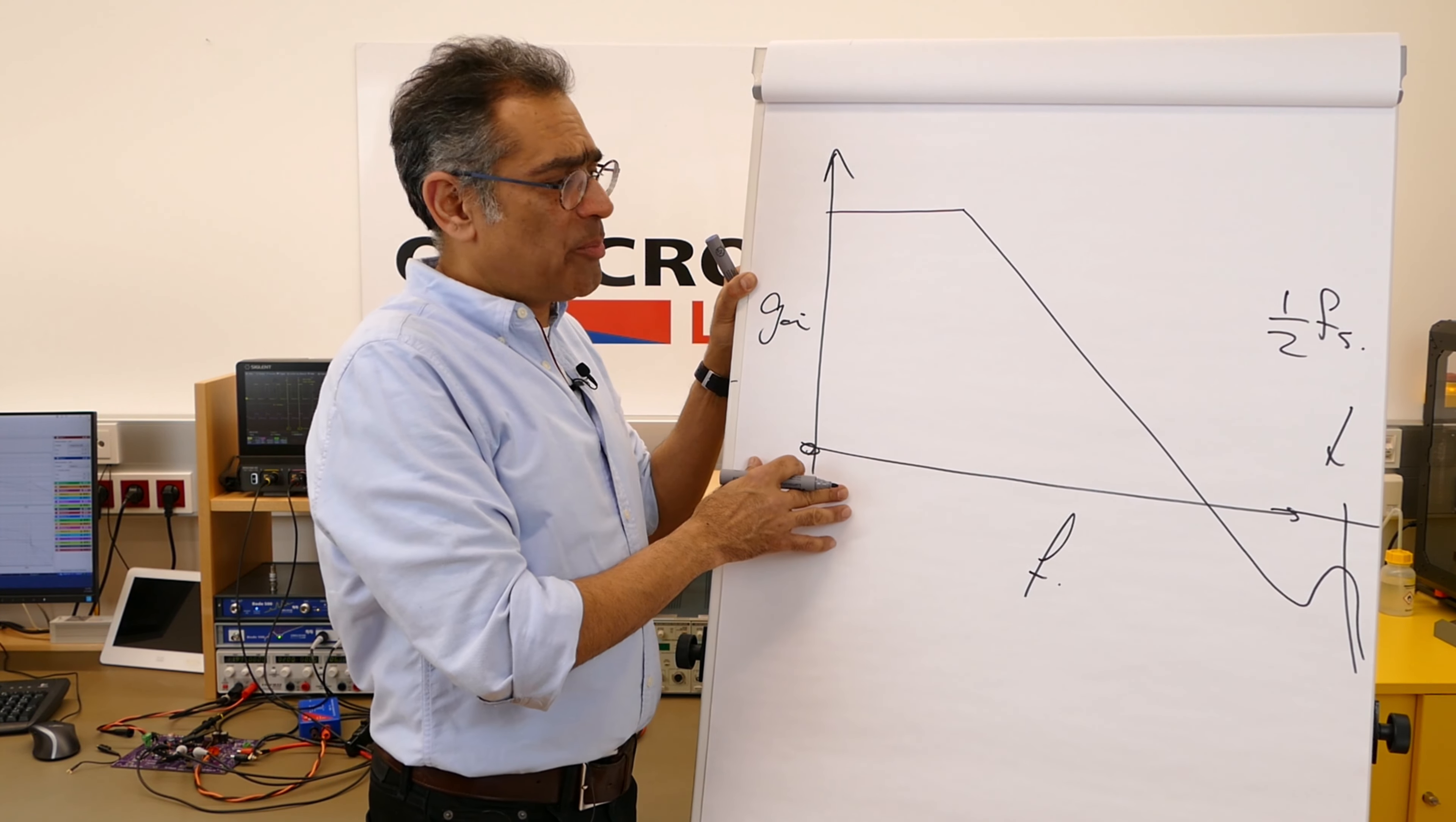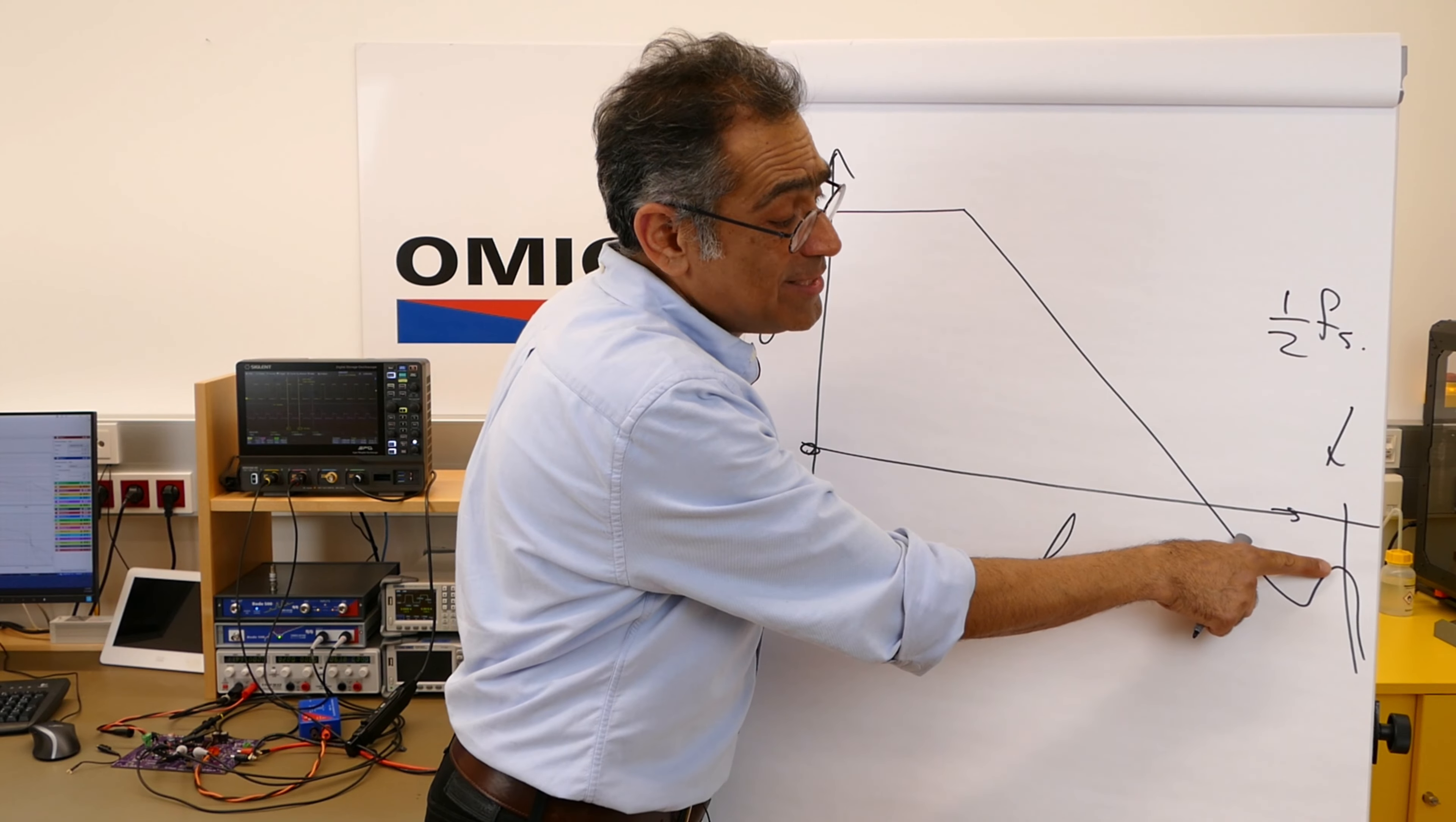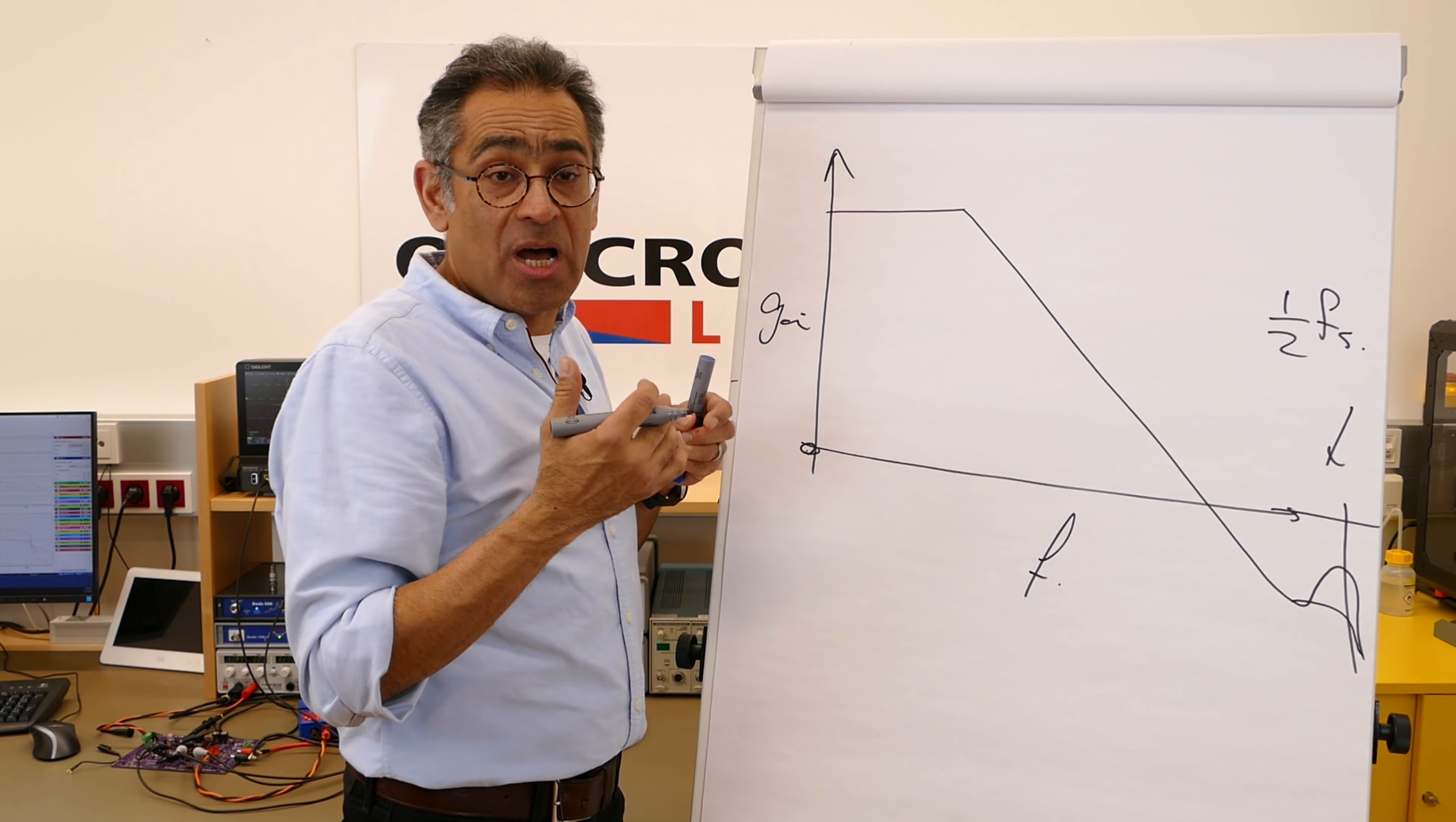This was famously modeled by Dr. Ray Ridley, whereby he approximated this resonance to a double pole underdamped resonance system. And he proposed that if you damp this, then like any other resonance, the oscillations would go away. And of course, this is what the addition of the slope compensating ramp does.